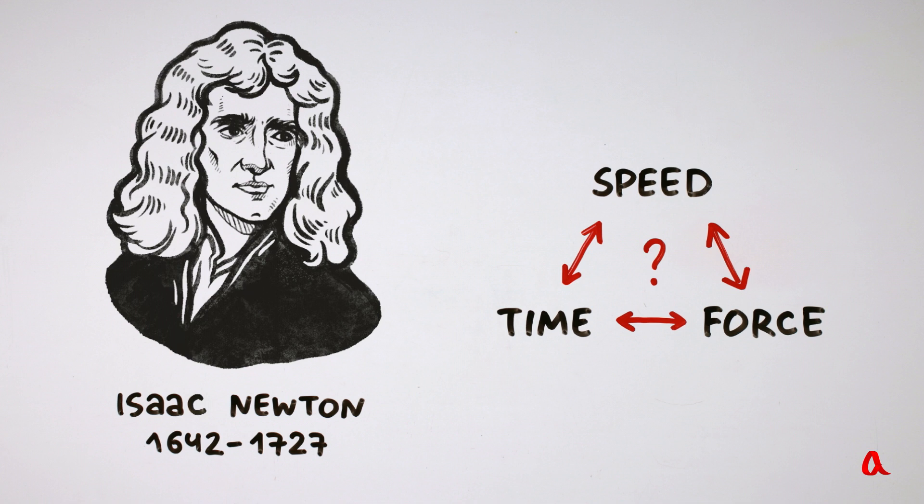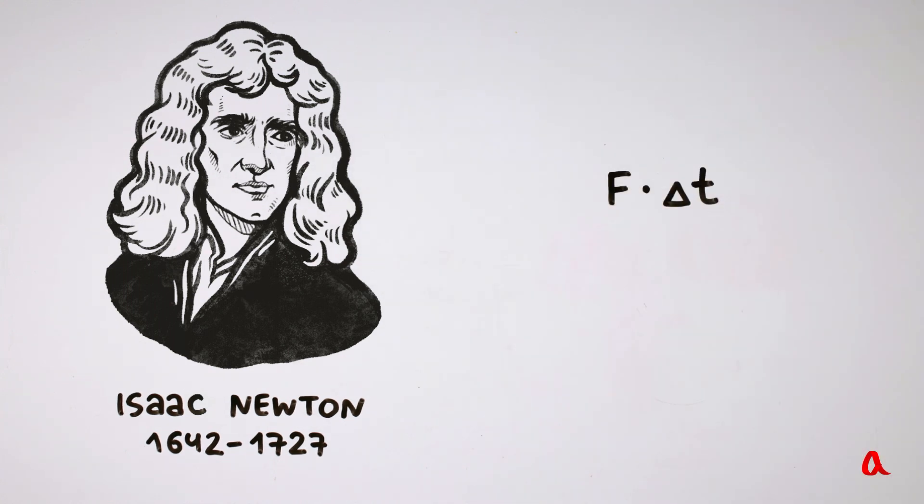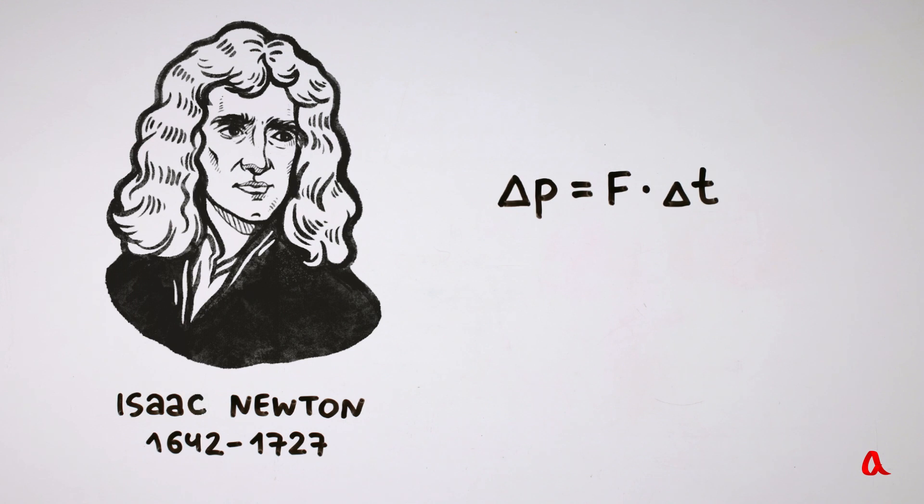Newton realized that the change of impulse of a moving body is determined by the product of force f multiplied by the time of its action delta t. This is the way it's written down mathematically. Delta p equals f by delta t.